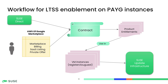Here's the workflow for LTSS enablement on pay-as-you-go instances. For Google and AWS, there's a marketplace listing that can be used to transact — it goes to your committed spend discount. For Microsoft, you would just contact SUSE directly. Then there will be a contract, you'll get product entitlements, and you use those with the register-cloud-guest command. That connects you to the SUSE update infrastructure, you automatically get the LTSS repositories, and when there are updates in the LTSS stream you run zypper up and get the updates — everything is just fine.